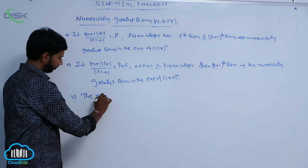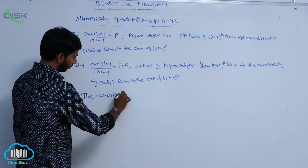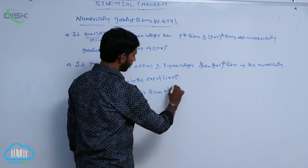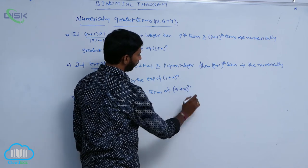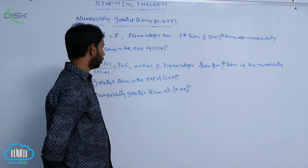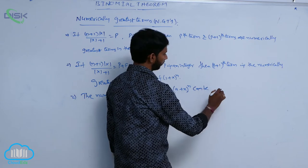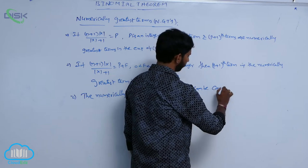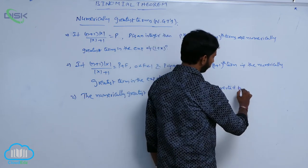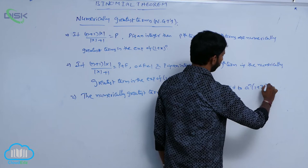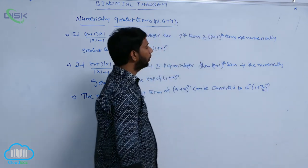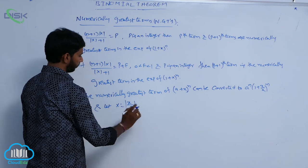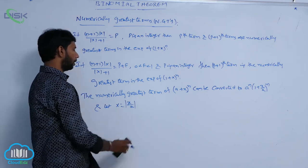The numerically greatest term of (A + X)^N can be found by converting it to A^N into (1 + X/A)^N. Let the substitution variable equal mod of X by A, i.e., X/A.